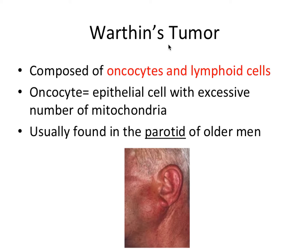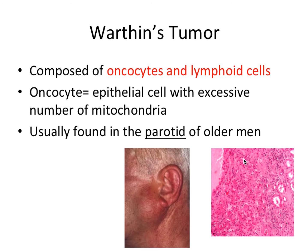Lastly, we have Warthin's tumor, which is composed of oncocytes and lymphoid cells. Oncocytes are epithelial cells with an excessive number of mitochondria. Warthin's tumor is usually found in the parotid of older men, so it presents as a parotid swelling near the ear. Just for some context, it's not too important to know how they look for a board exam, but just to see — an oncocyte is on the left side of this image, and all of these larger pink staining, or eosinophilic, cells are the oncocytes in this slide.